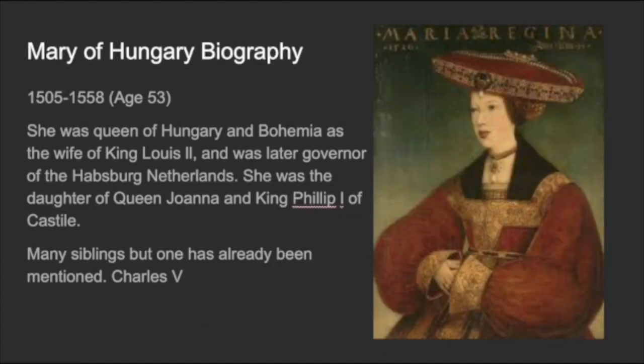Finally we come to our patron of the unit: Mary of Hungary, also known as Mary of Austria. She was the daughter of Queen Joanna and King Philip the First of Castile. Mary married King Louis the Second of Hungary and Bohemia in 1515, and their marriage was happy but short and childless. Upon her husband's death following the Battle of Mohács in 1526, Queen Mary governed Hungary as regent in the name of the new king, her brother Ferdinand the First.